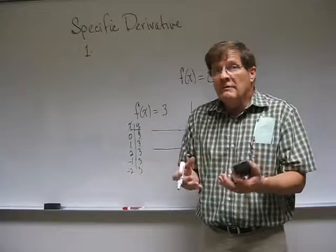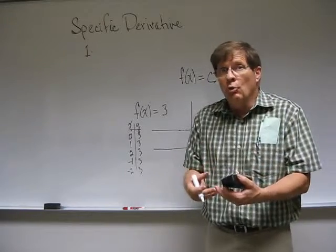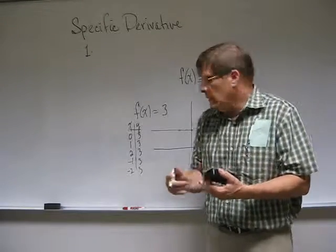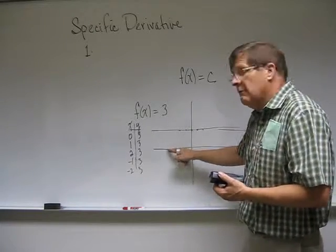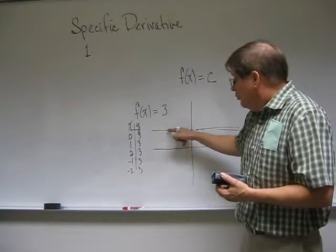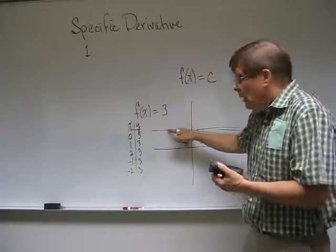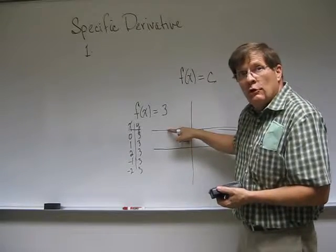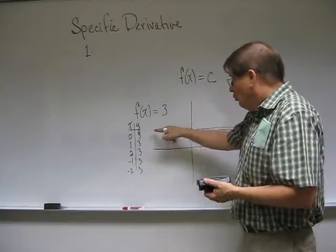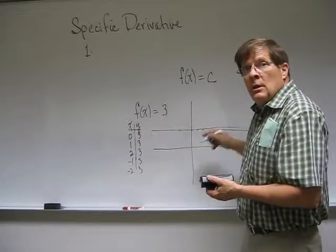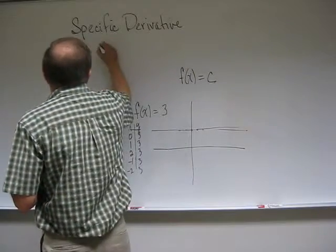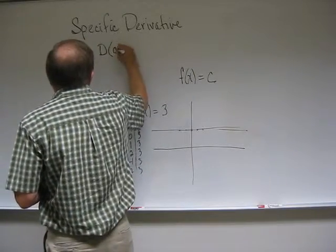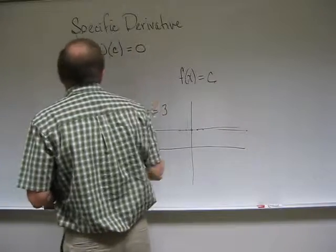Now remember, the derivative tells the slope of the curve at any point. No matter what point we pick, say we pick the point negative 4, then we get a 3 out as the y value, and the slope of that curve is 0. No matter where we pick, the derivative of a constant function is 0. That's our first specific rule. The derivative of the constant is 0.